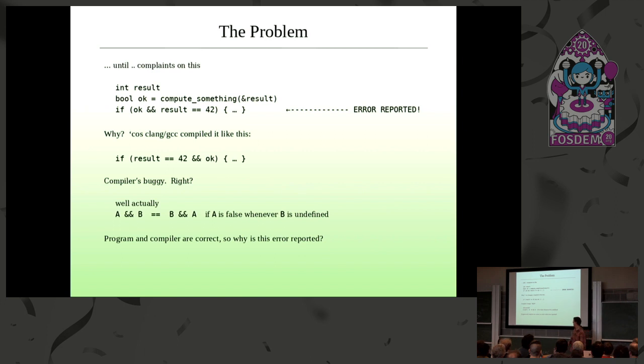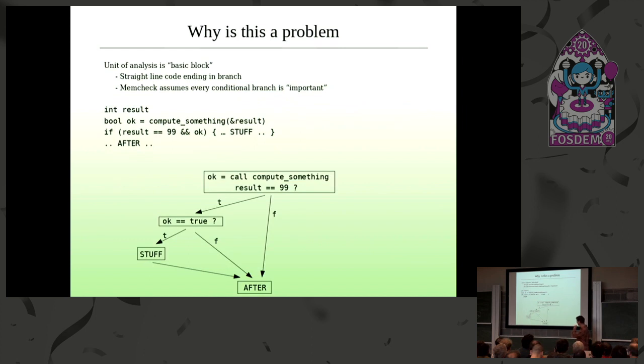Anyway, so nevertheless, the whole thing is correct. So why is Memcheck reporting errors? Well, the answer to that is real simple. And I apologize here to the compiler crew. Basically, the problem is that Memcheck's unit of analysis is a basic block, which is just a straight line piece of code, which usually ends in a conditional branch. And that is the scope of the analysis. And it assumes that every conditional branch is important, which always used to be true up until this happened.